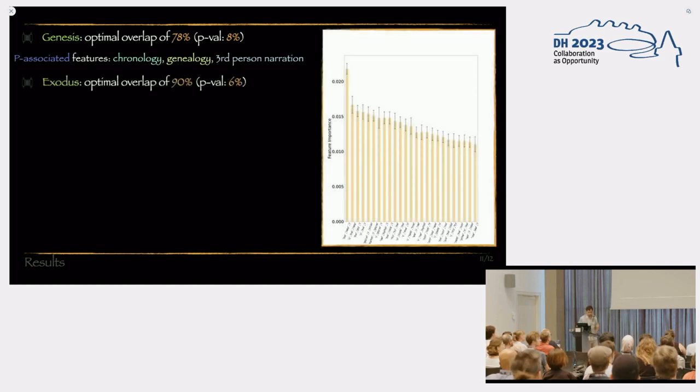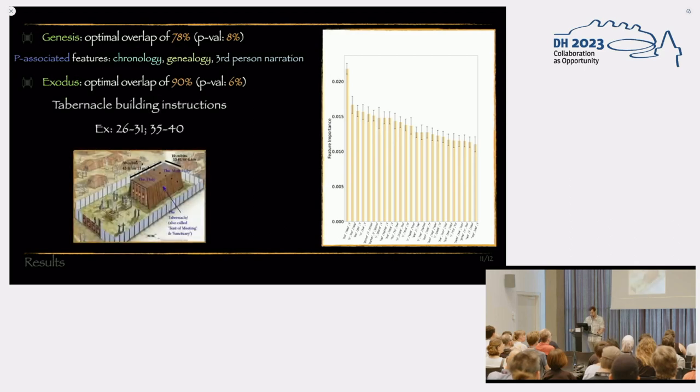For Exodus, we get a 90% agreement, as you saw, for both representations of part of speech and vocabulary, with a lower p-value, so it's even more significant than that. And what we found is essentially two distinct big blocks of P-associated material in the book of Exodus, concerning the building of the tabernacle. So these are like instructions of how to build and how to worship in the tabernacle. So this is essentially a no-brainer.